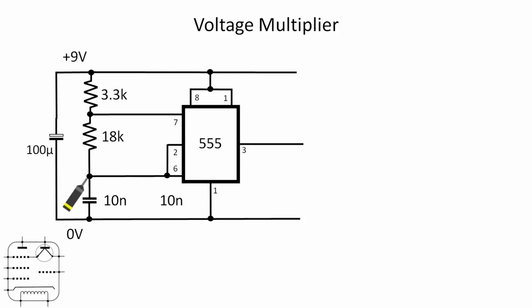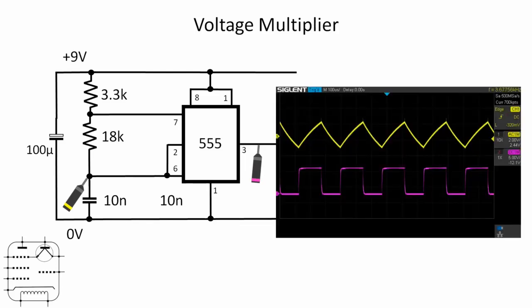So if we probe the junction between the capacitor and the resistor and we also probe the output we get these two traces. The yellow trace is the charging and discharge curve of the capacitor and that's what drives the frequency, it's about 3.6 kHz you can see the scope is saying on the top right.